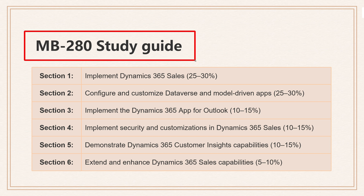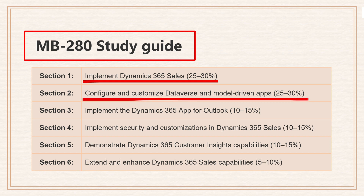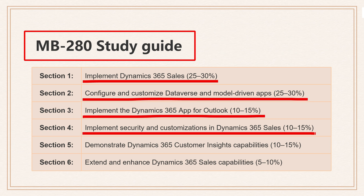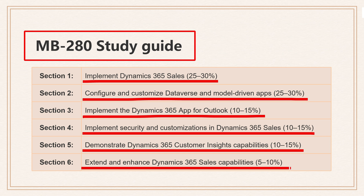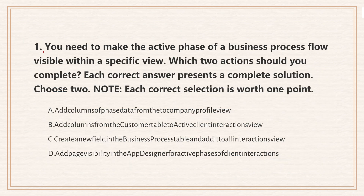Study Guide. Question 1: You need to make the active phase of a business process flow visible within a specific view. Which two actions should you complete? Each correct answer presents a complete solution.